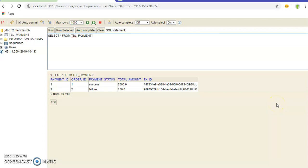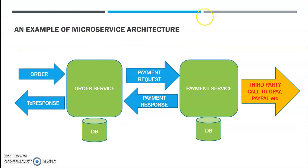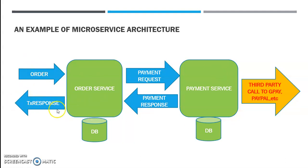To summarize the entire flow: an order object is passed to the order service, followed by a payment request to the payment service, then a third-party call is made, a payment response comes back from the payment service to the order service, and a transaction response is sent to the customer. We have created an end-to-end solution. The third-party integration part is not fully implemented but can be added later. This is the entire structure of the microservice example for today.